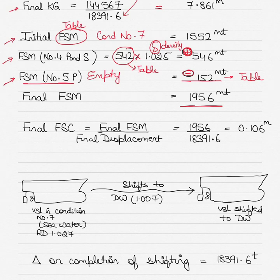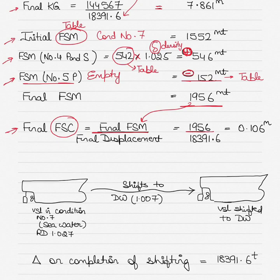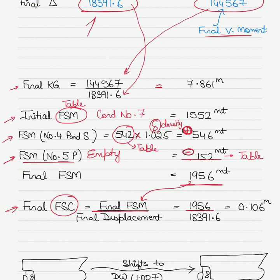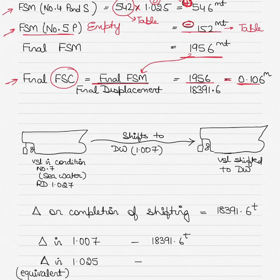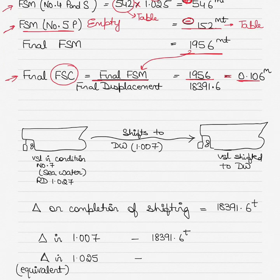FSC — free surface correction — equals the final free surface moment of 1956 divided by the final displacement of 18391.6, giving a final free surface correction of 0.106 meters. Note that in condition number 7 the relative density was 1.025, not 1.007.